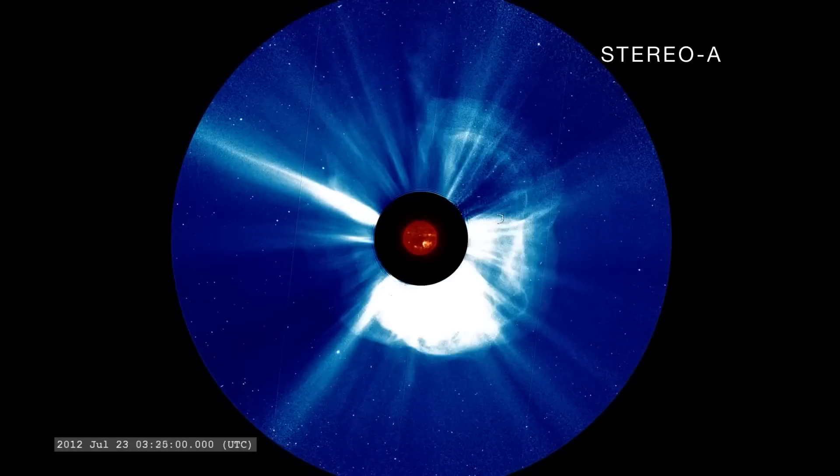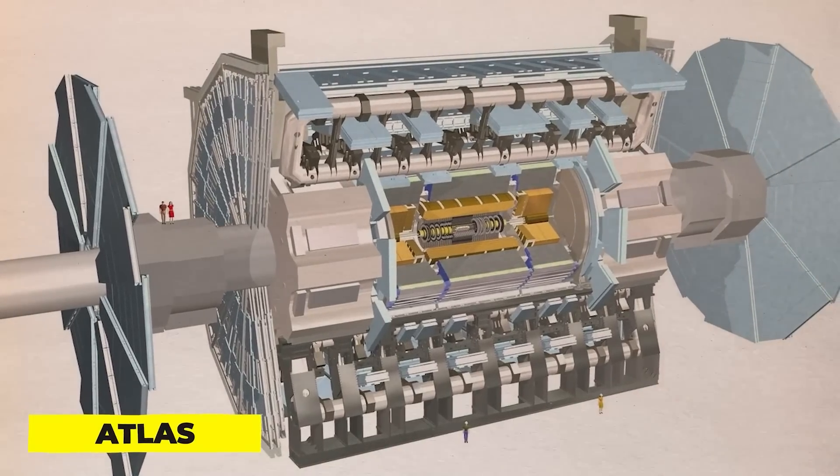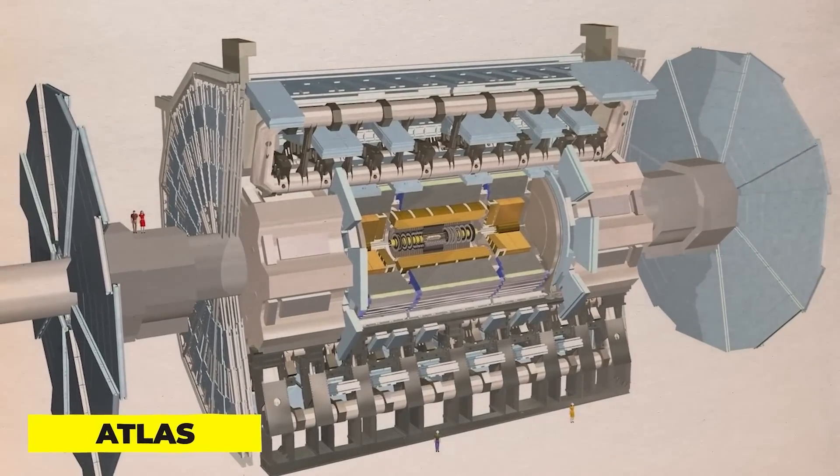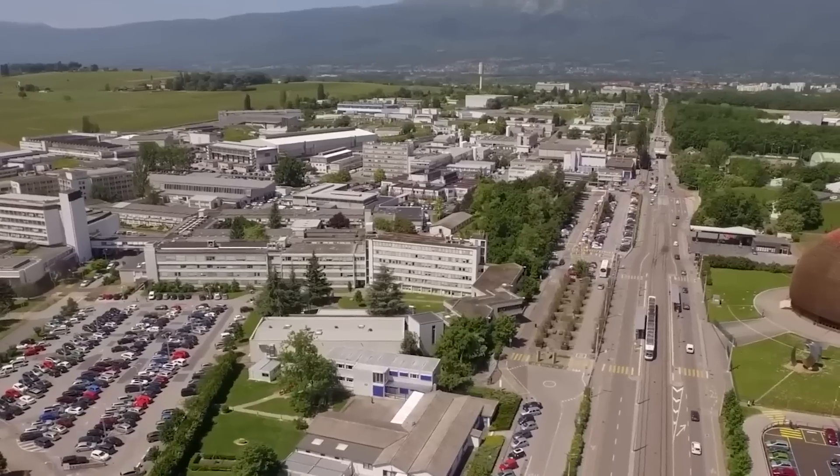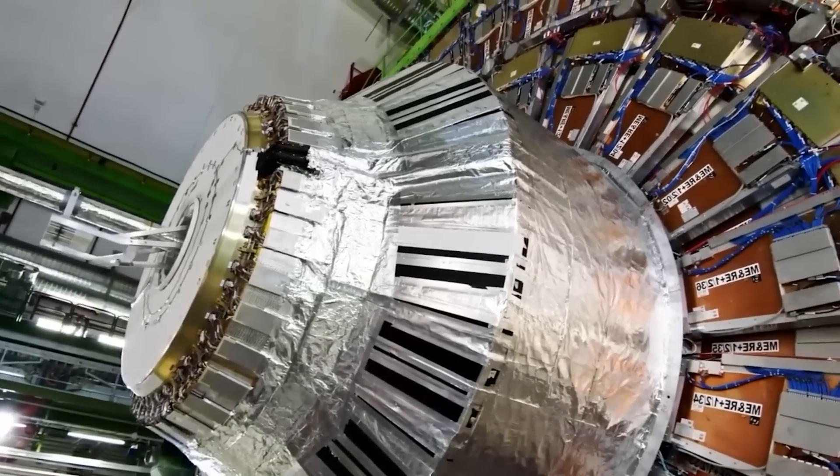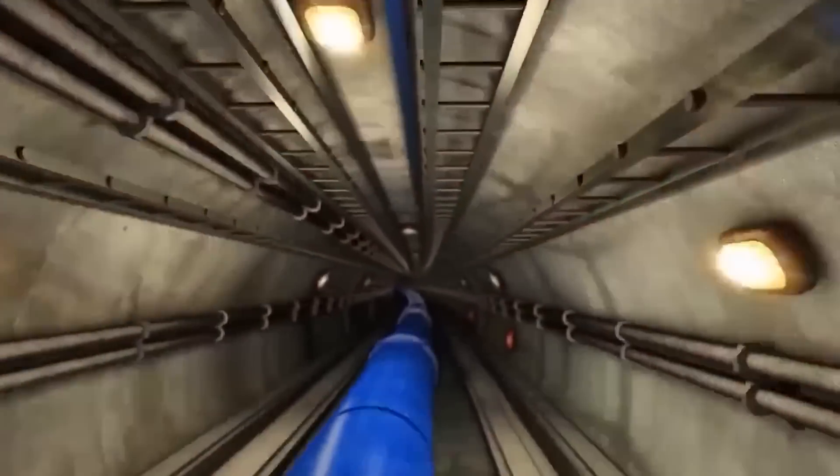Atlas is a 46-meter long and 25-meter high detector. It's one of the four LHC devices that examines the particles the LHC produces. It's currently more potent than ever. There are four such detectors at the LHC, and each one conducts a distinct experiment.